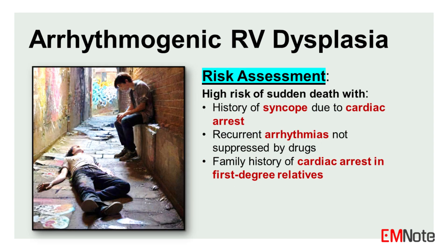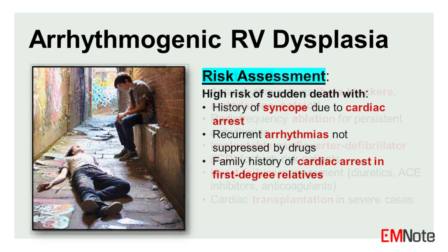Individuals with arrhythmogenic right ventricular cardiomyopathy are stratified as high risk for sudden cardiac death in the presence of a documented history of syncope attributable to cardiac arrest, recurrent episodes of ventricular arrhythmias refractory to antiarrhythmic medication, or a positive family history of sudden cardiac death in a first-degree relative.